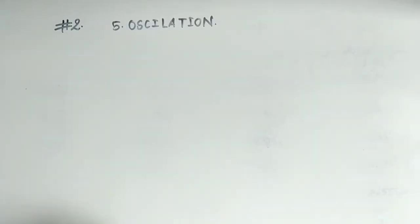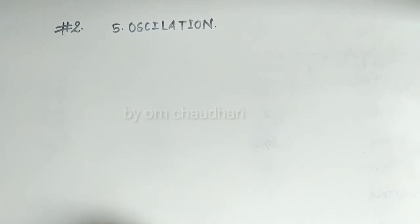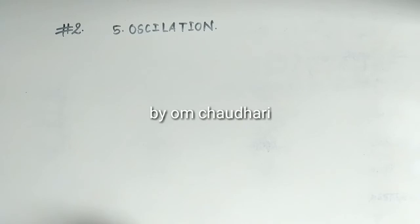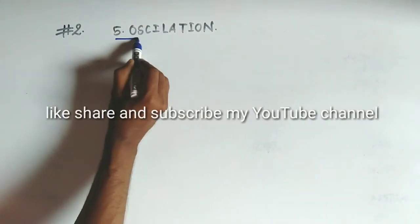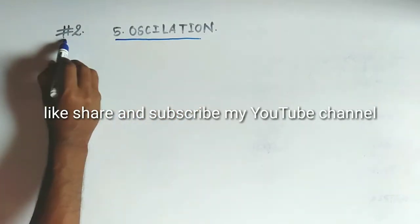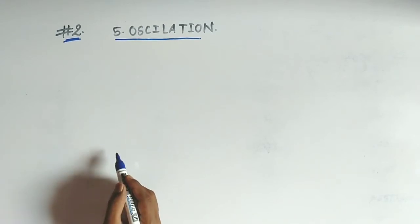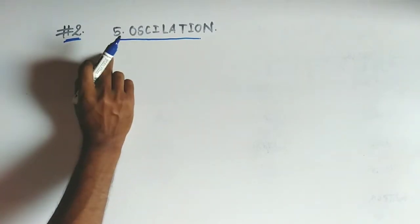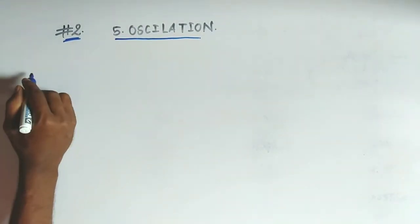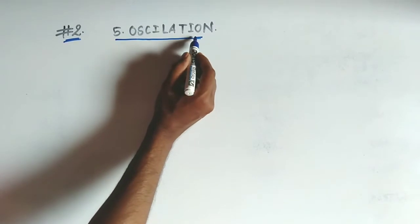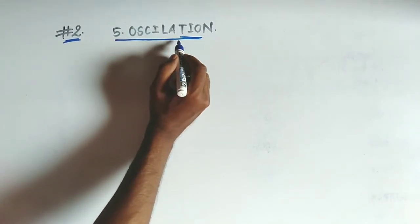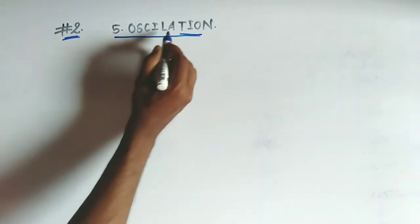Good afternoon friends, welcome to this physics tutorial. In the last lecture we studied some introductory parts related to oscillation. We are studying lesson number five from part one — oscillation. This is our second lecture based on oscillation. Today we will clearly study basic terms related to oscillation, including types of motions and the definition of oscillatory motion.